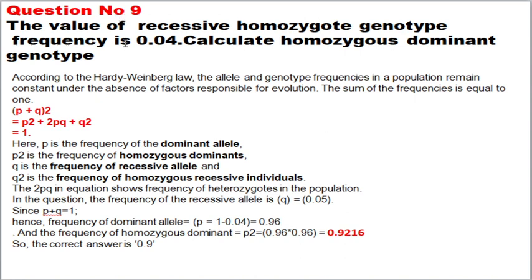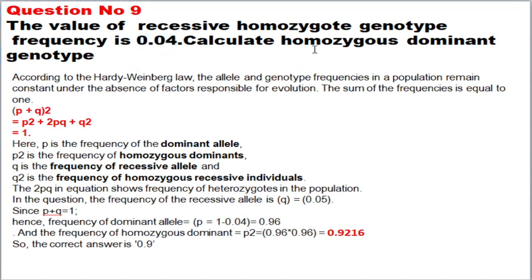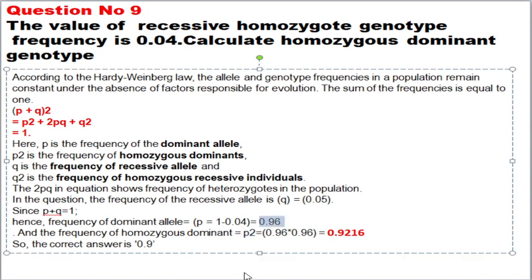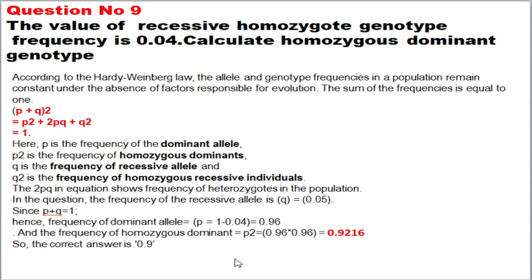Question 9: given the value of recessive homozygous genotype frequency, calculate the homozygous dominant frequency. The correct answer is 0.9. Using Hardy-Weinberg: p + q = 1, so p = 1 − 0.04. The frequency of homozygous dominant genotype is p², so multiply 0.96 × 0.96. You can find these problems in the 12th zoology book in the last few pages — please refer to that book and also Lakhmir standard zoology and botany books and NCERT books.